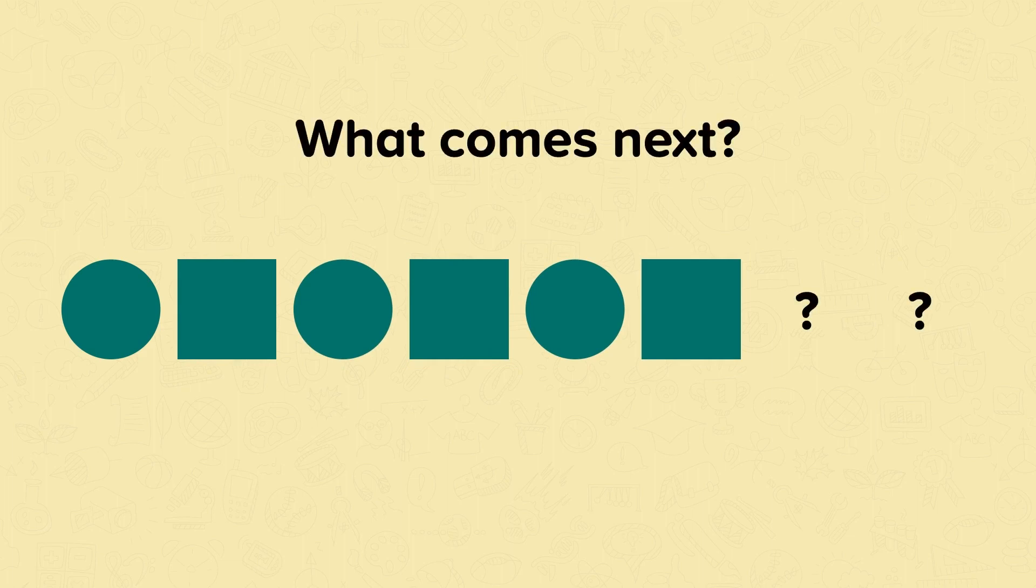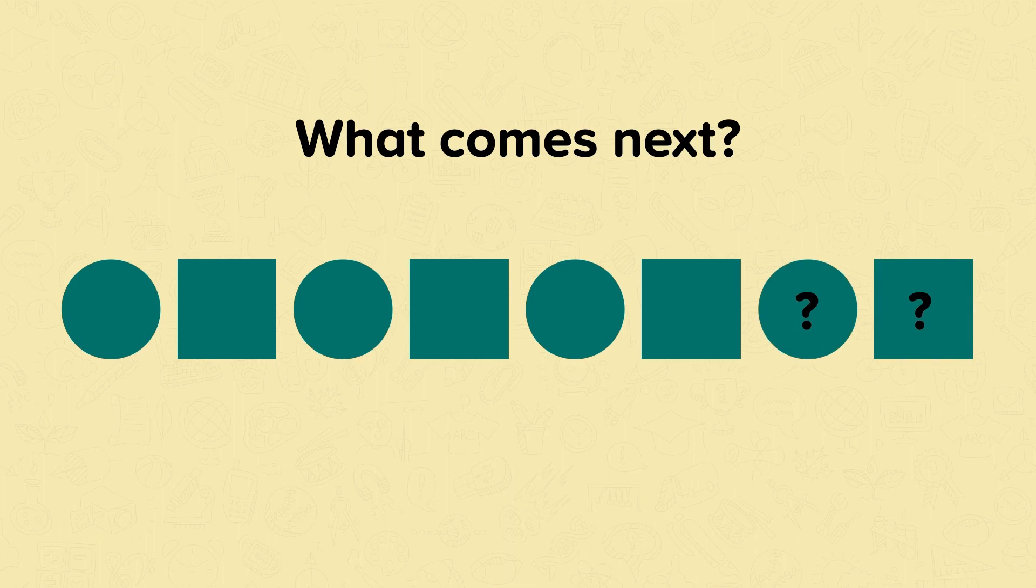Well done if you knew that it would be a circle and then a square. Sometimes, if you can say the pattern out loud, it can help you work out what should come next. This pattern is called a repeating pattern because the first two shapes just keep repeating. This pattern has repeated four times.